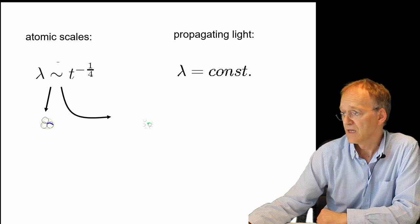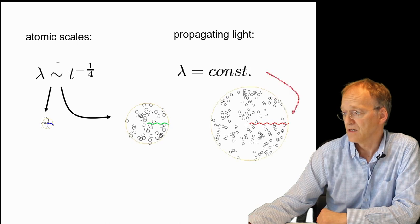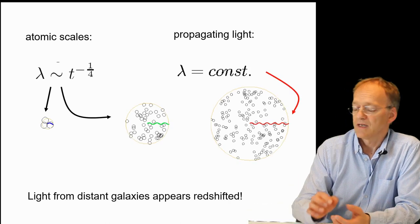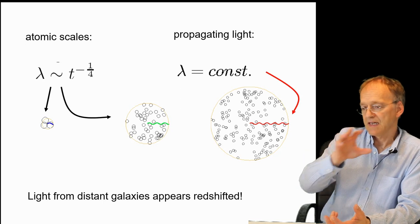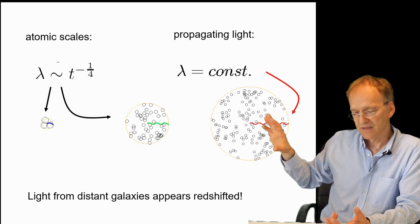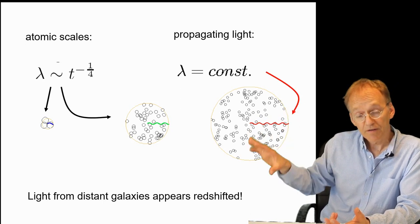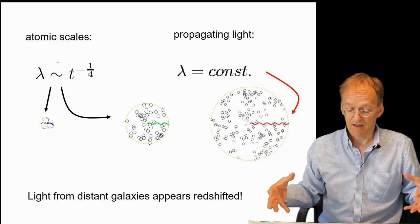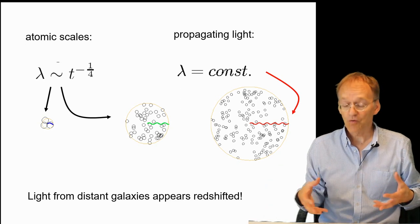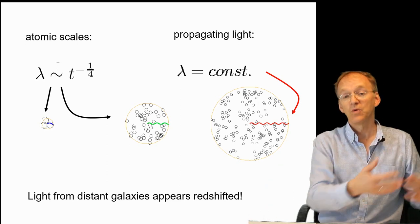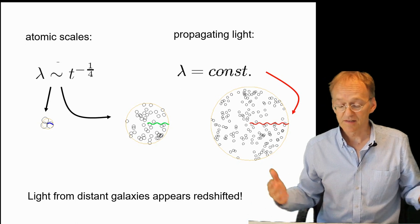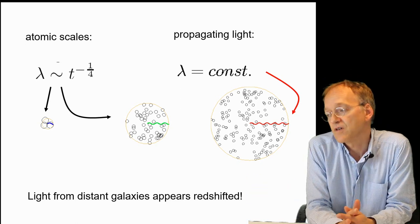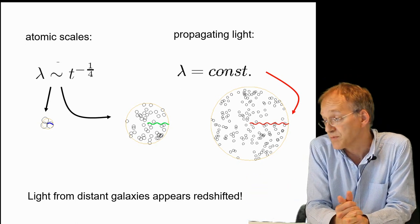And now, if you look at the cosmic evolution, you realize that propagating light has to maintain its wavelength. And if the general evolution of wavelength is that they decrease, of course, light from the past will appear redshifted. And this is the explanation of the cosmic redshift based on variable speed of light, which is very different from standard cosmology.